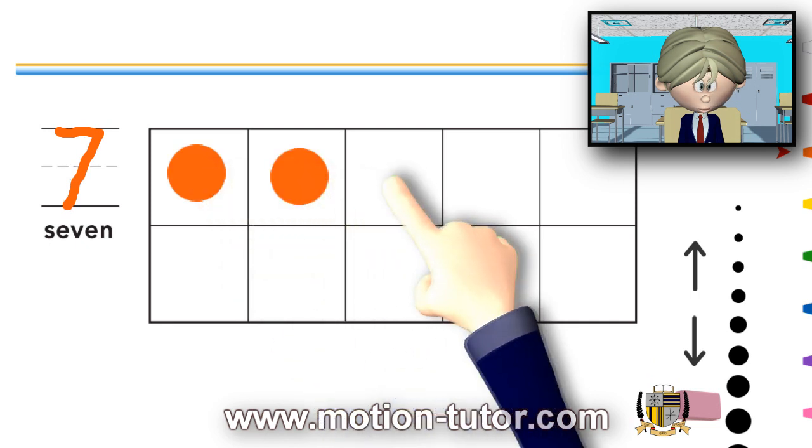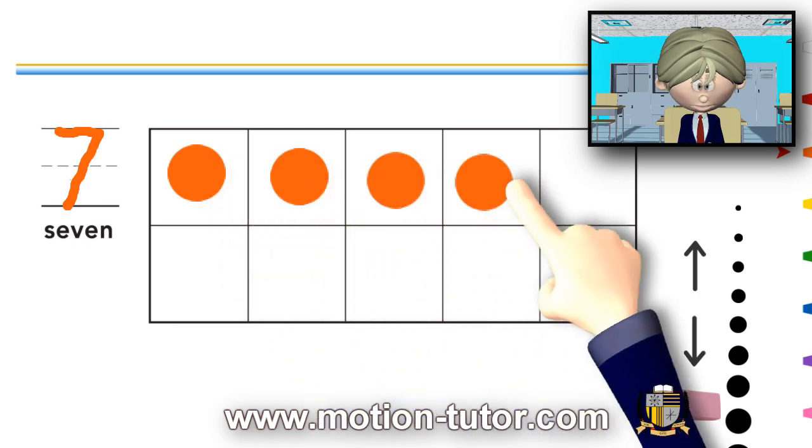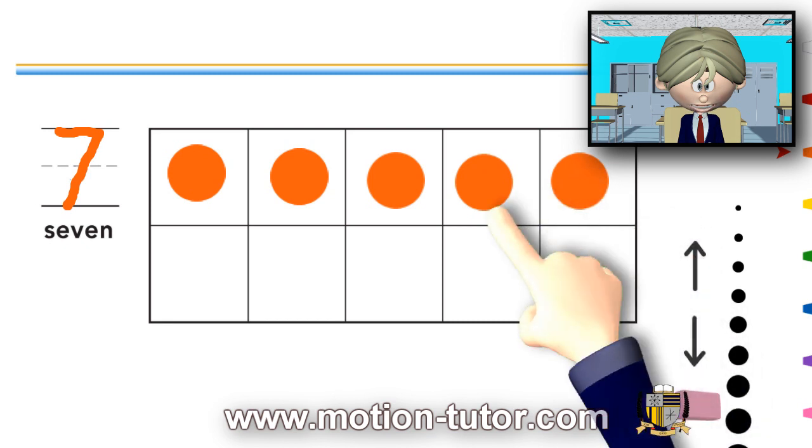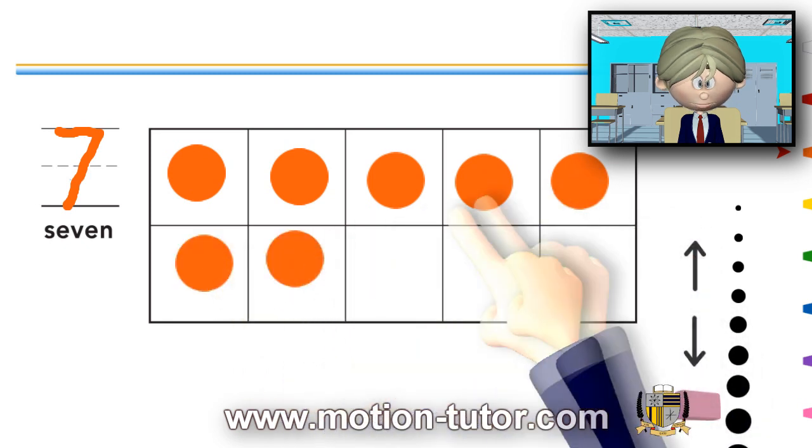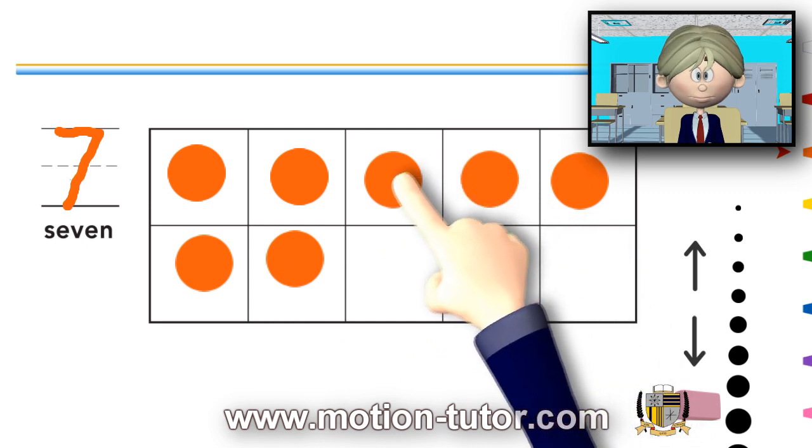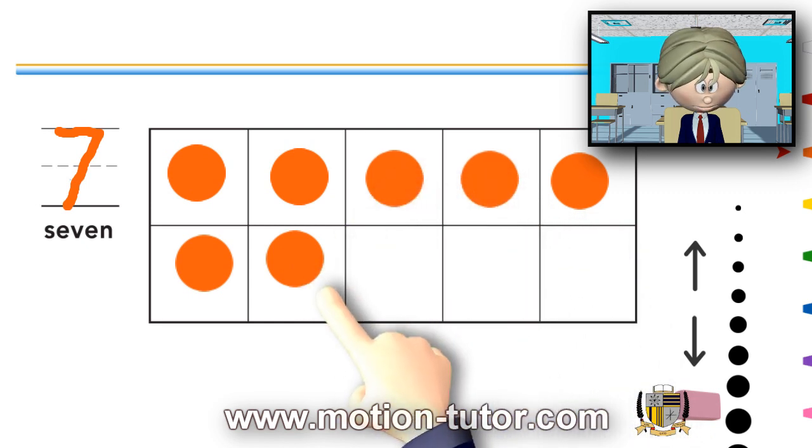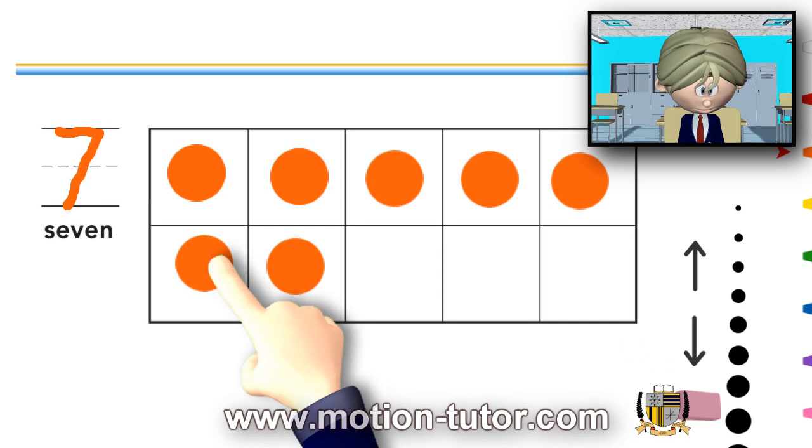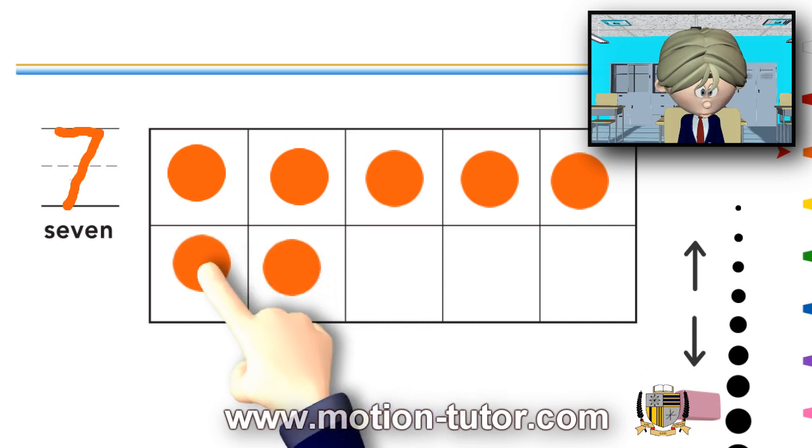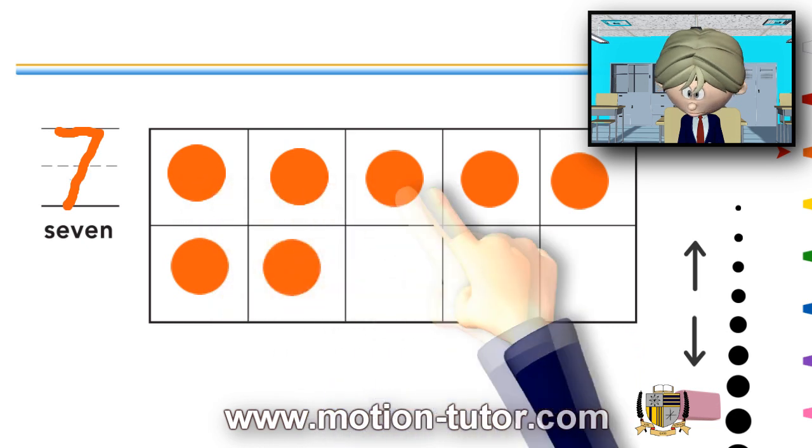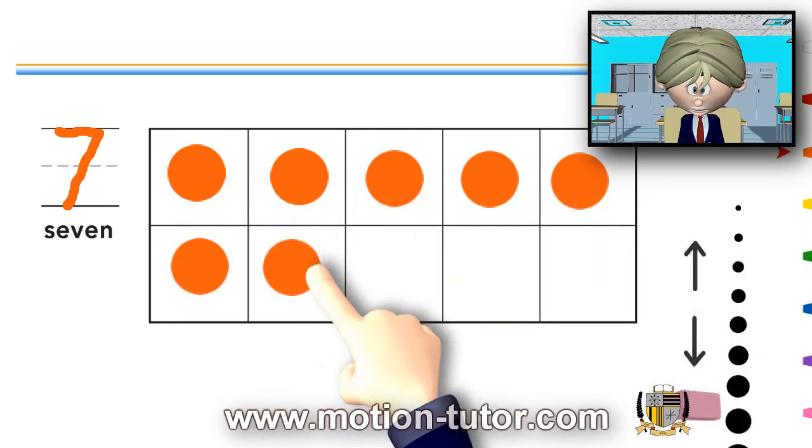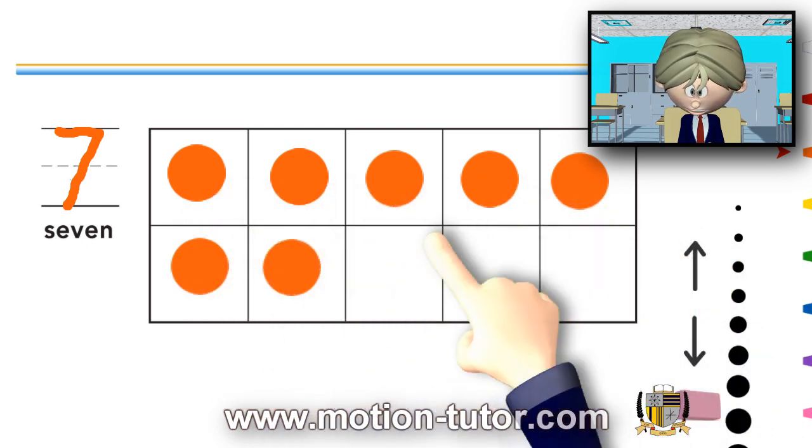1, 2, 3, 4, 5, 6, 7. So, here's a 10 frame with 7 counters in the 10 frame. We have 5 up here and 2 more. And together, that's 7.